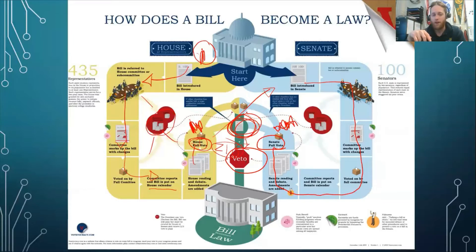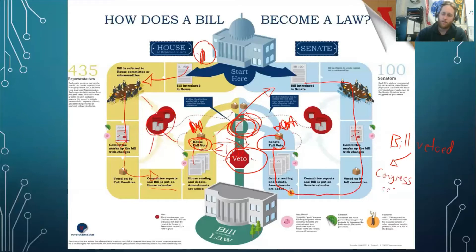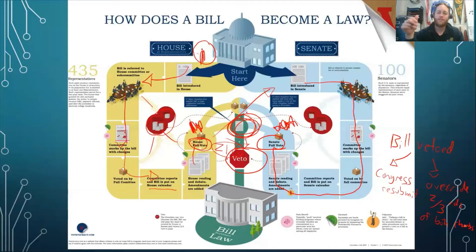So if Congress gets a bill vetoed, on one hand Congress can resubmit it with revisions, or they can override the veto. To override the veto, they need two-thirds of both chambers. When Congress overrides the veto, it forces the bill into becoming a law even if the President doesn't like it.